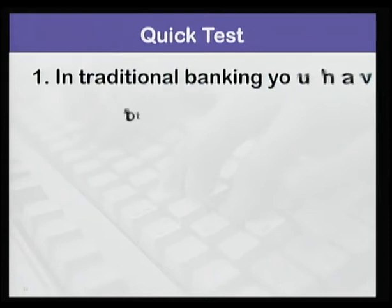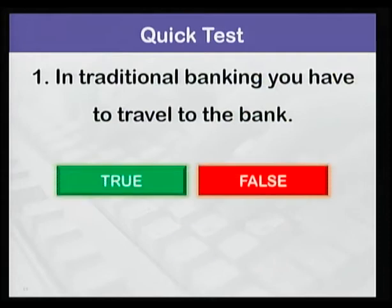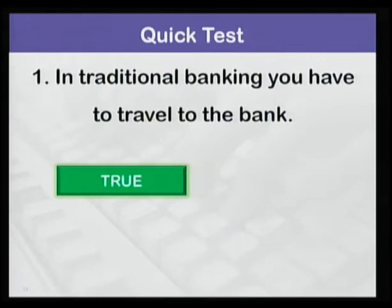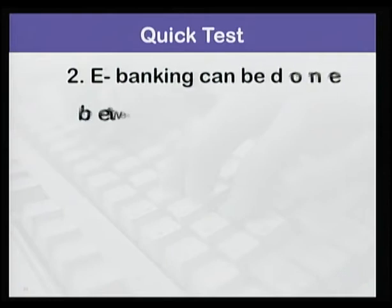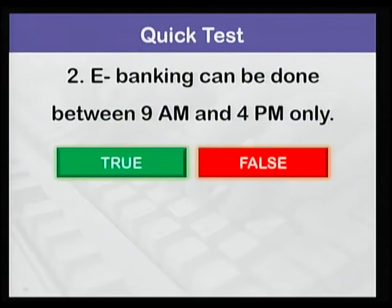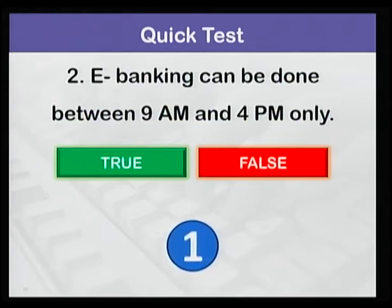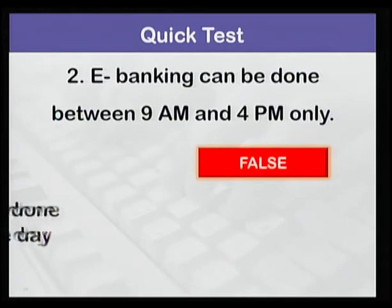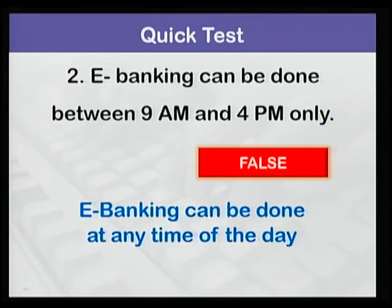Let's do a quick test on traditional banking and e-banking. Read the statements carefully and see whether they are true or false. Statement 1: In traditional banking, you have to travel to the bank. The answer is true. Statement 2: E-banking can be done between 9 a.m. and 4 p.m. only. The answer is false, as e-banking can be done at any time of the day.